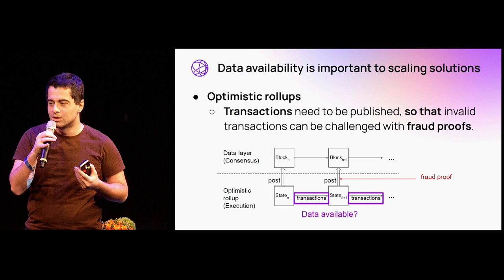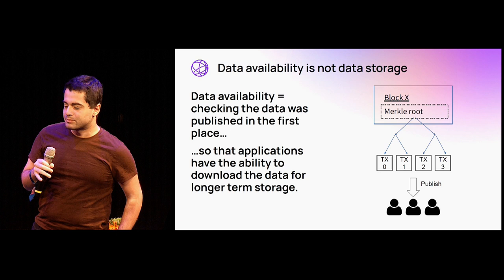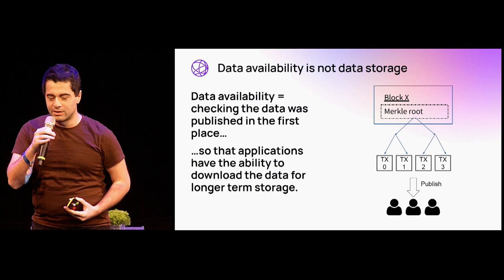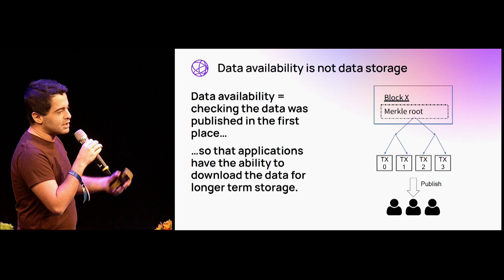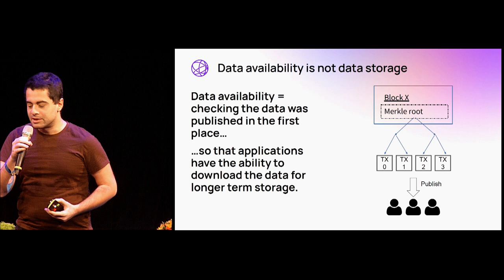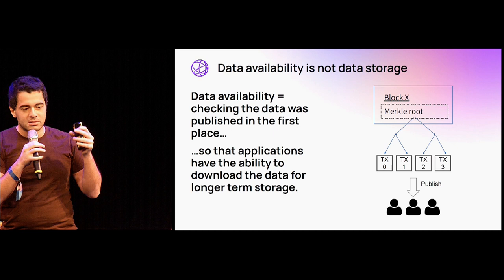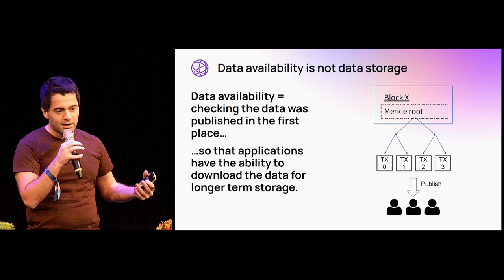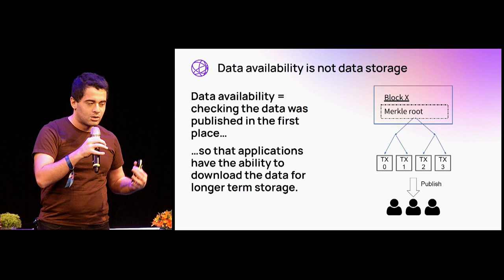It's worth noting — because there's a lot of confusion — that data availability is not the same thing as data storage. Data storage is about making sure data is stored long term. But data availability is only about making sure that the data was even published in the first place, so that storage providers actually have the opportunity to download and store it. Data availability is not concerned with long-term data storage; it's only concerned with the question of how we make sure the data was published just once on the internet.